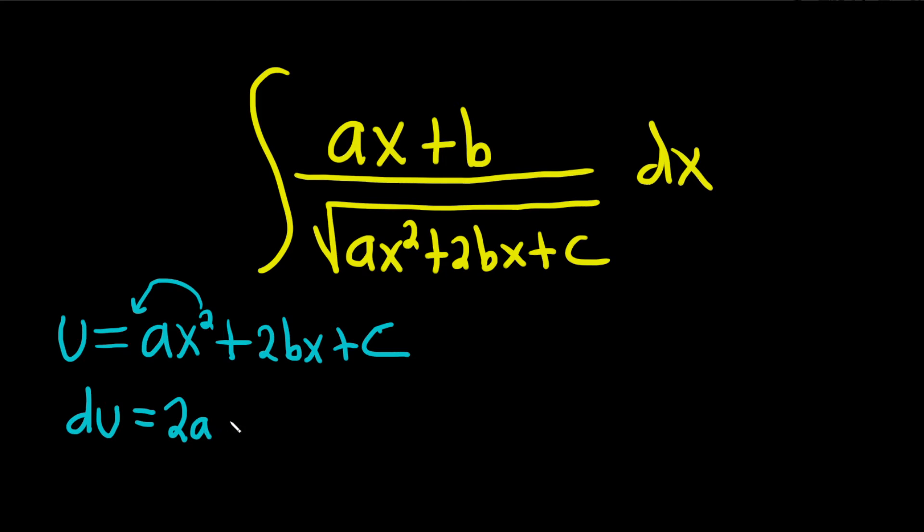So this is 2ax. Here the derivative of x is 1, so you just get 2b. And the derivative of c is 0. And then we put a parentheses and we put a dx.